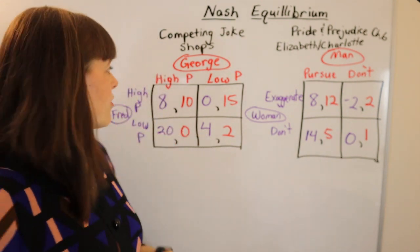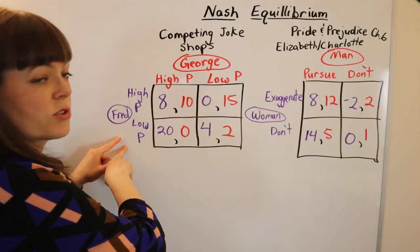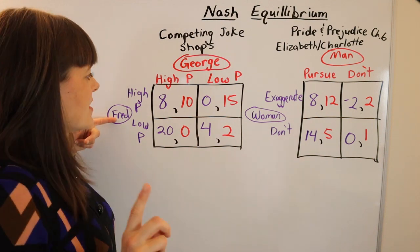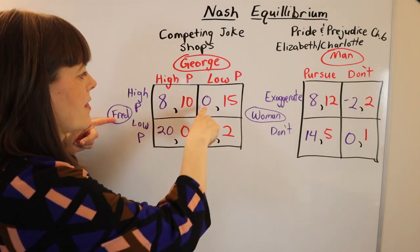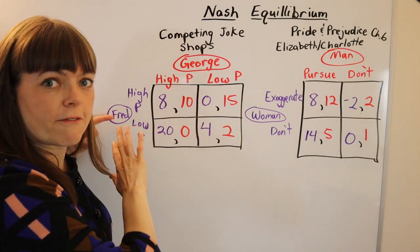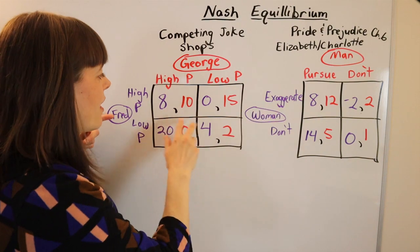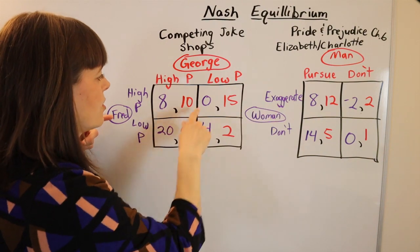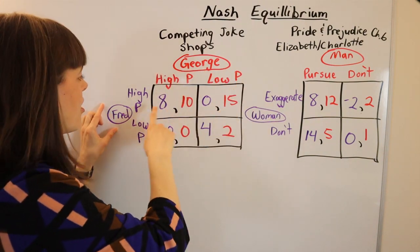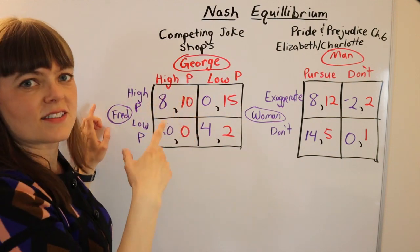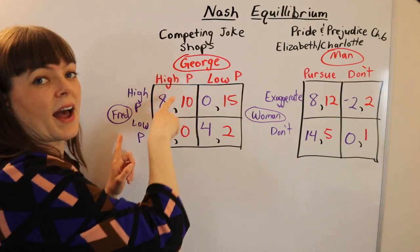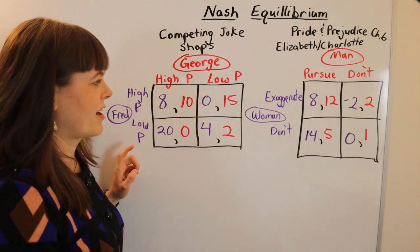Here's how you approach these. You start out thinking from player one's perspective, and that means you need to identify the payoffs in the table that are relevant to player one. For the first stage, you ignore the other payoffs — only the purple payoffs matter here. This is a joke shop scenario where Fred and George are trying to decide: do I set my price higher or set my price low when I have the other brother as my competitor?